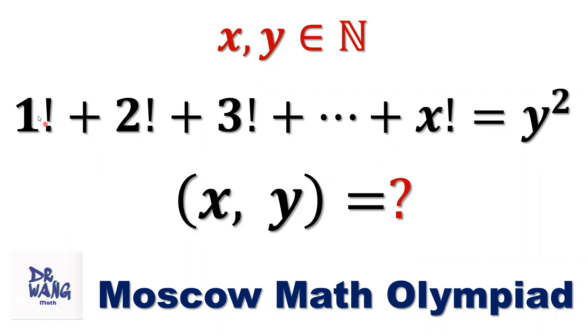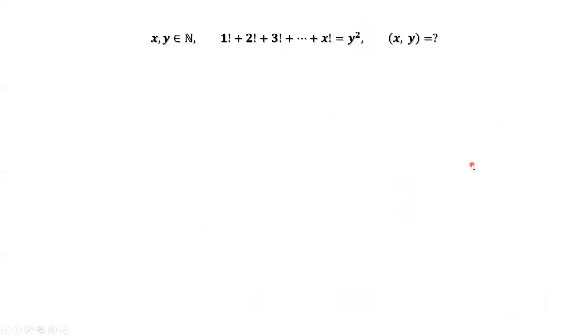This is a special equation. The left-hand side is the sum of x consecutive factorials. The right-hand side is y squared. Here, y is a positive integer. How to solve this question?